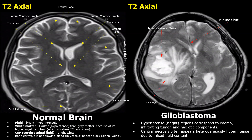On the right, we have a T2 image showing a mass in the parietotemporal lobe which was a glioblastoma. A glioblastoma appears bright in a T2 image. These hyper-intense areas correspond to edema, infiltrating tumor, and necrotic components.